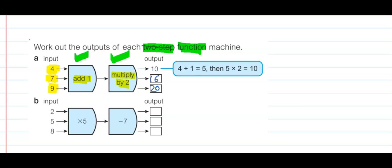Now it's your chance — the student I ask is going to apply these rules. We pick input value 2: 2 times 5 is 10, take away 7 is 3. Absolutely right. Next, 5 times 5 is 25, then 25 take away 7 is 18.